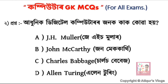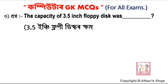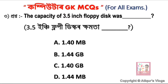The next question is about the capacity of a 3.5-inch Floppy Disk. It is a type of memory card. The options are: option A is 1.4 MB, option B is 1.44 GB, option C is 1.40 GB, and option D is 1.44 MB. For a 3.5-inch floppy disk, option D — 1.44 MB — is the correct answer.